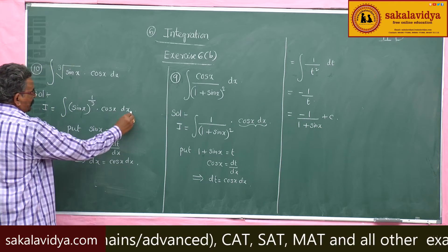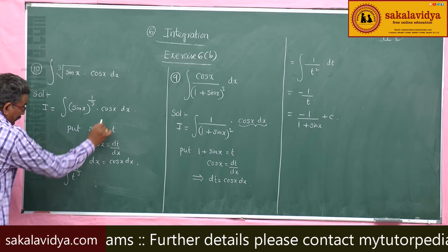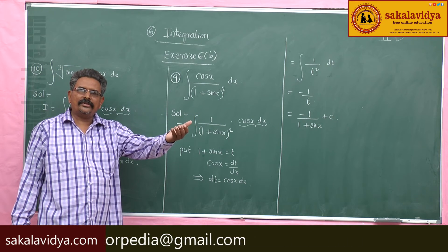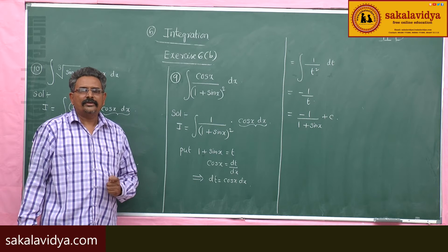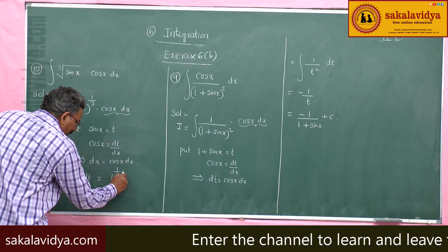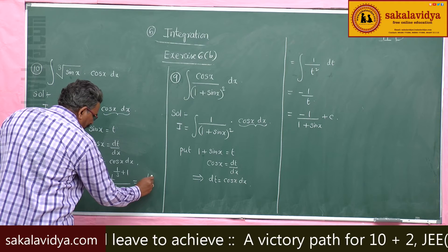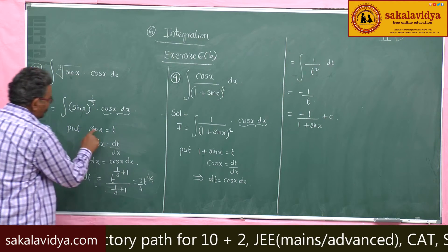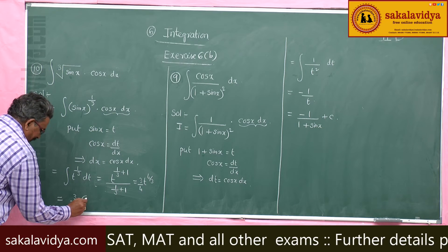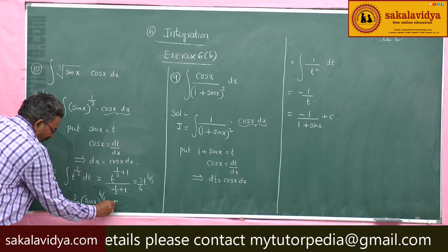Now, this cos x dx and sin x — we can write this as integral of t to the power 1 by 3, where cos x dx is nothing but dt. Using the power rule, integral x to the power n dx equals x to the power n plus 1 by n plus 1. So, integral t to the power 1 by 3 dt equals t to the power 4 by 3 divided by 4 by 3, that is 3 by 4. Since t is sin x, this equals 3 by 4 times sin x raised to the power 4 by 3, plus constant of integration.